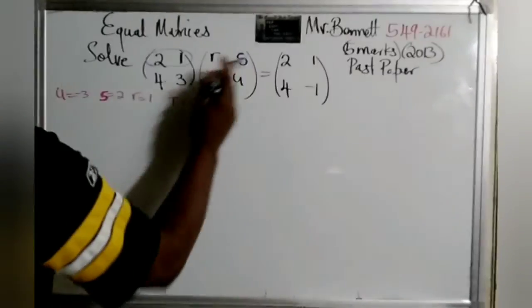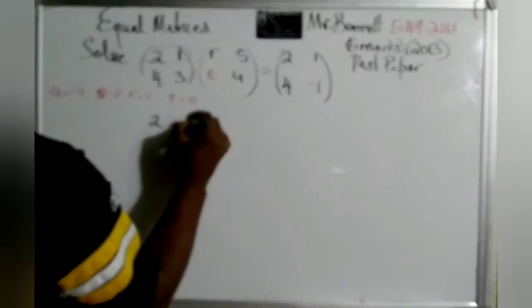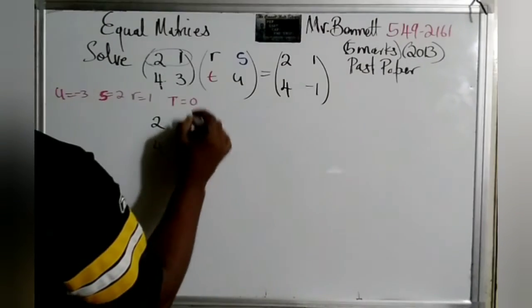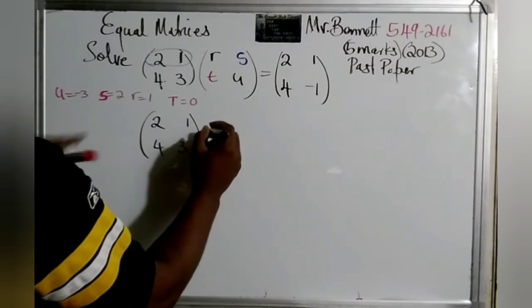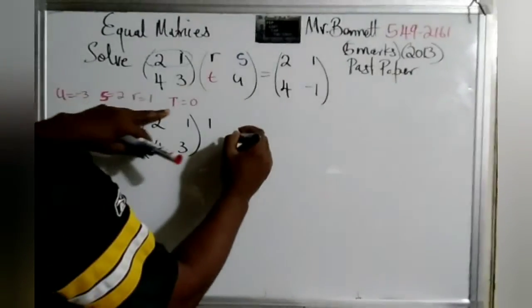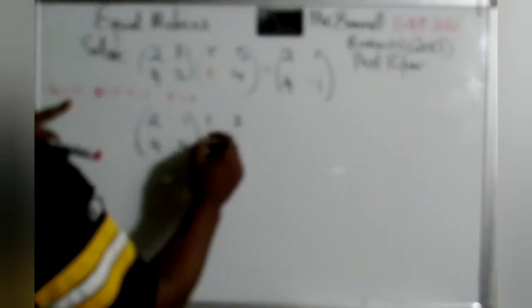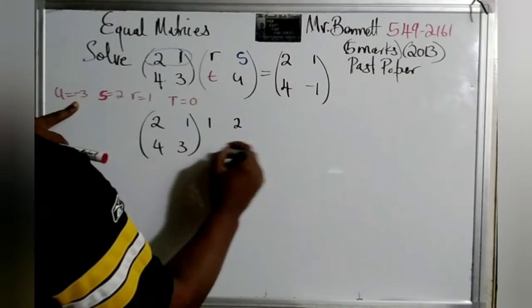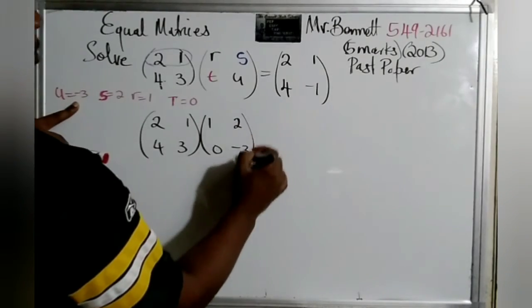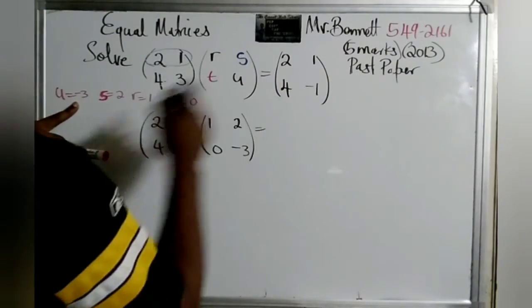So we're going to replace the values. So we have 2, 1, 4, 3. We get R to be 1, so we'll put 1 here. S is 2, so we'll put 2. U is negative 3, and T is 0. When we multiply, we're supposed to get this. So let us go.